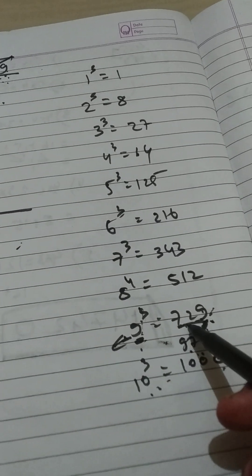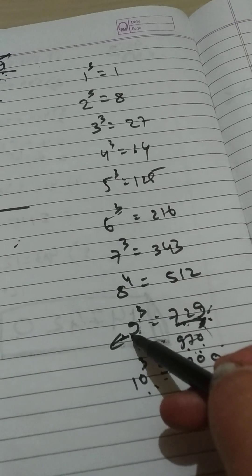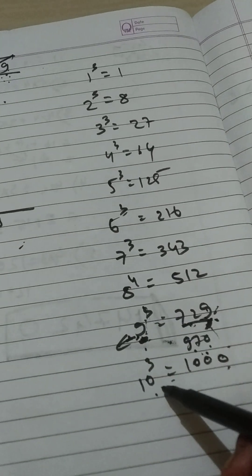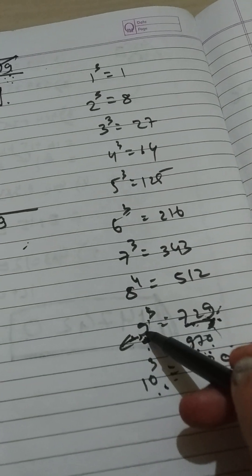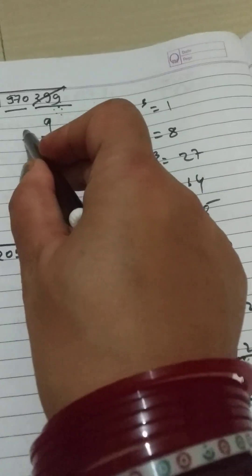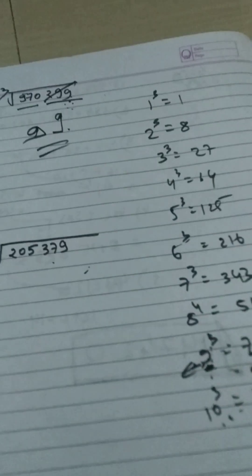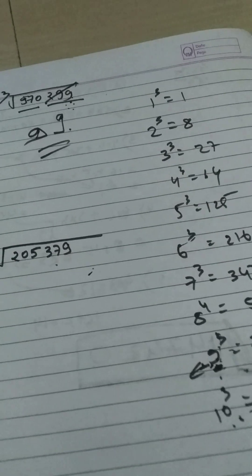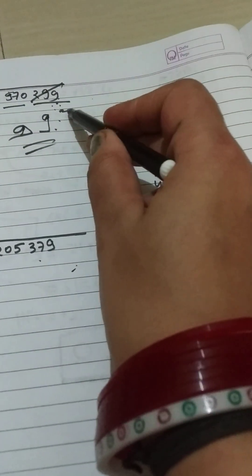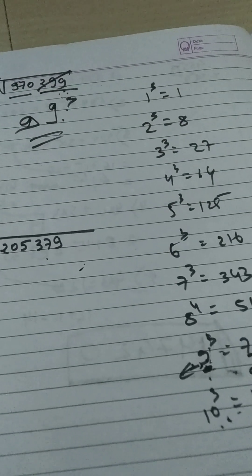So we will consider 9 here. So the answer is 99. Cube of 99 is 970299.